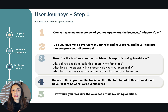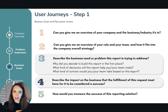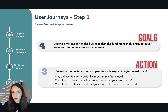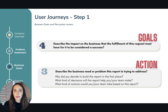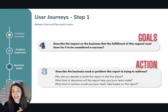The second relevant question is about describing the impact on the business that the fulfillment of this reporting request must have for it to be considered a success. With the answers from those two questions, we will be able to understand what are the goals of the business and what actions the business needs to take to achieve those goals. We will look into this process in a little bit more detail in the requirements gathering framework, and we've done that in the previous module.